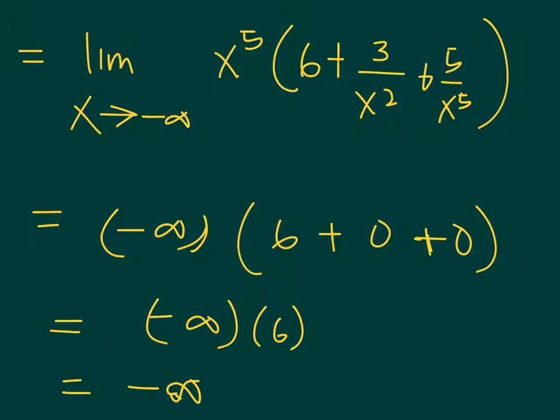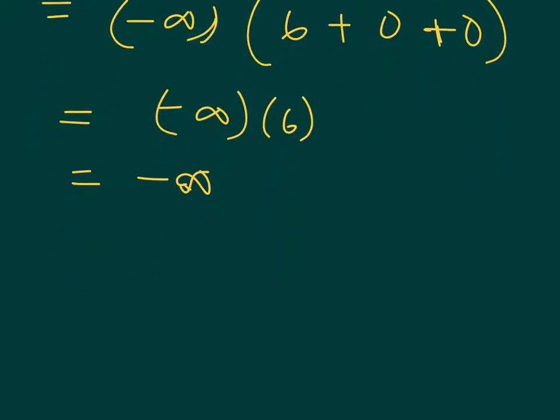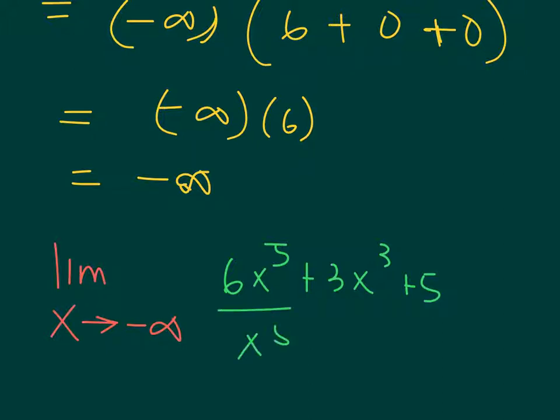So let us show the common mistake. If we suppose we decided to just divide everything by... we have 6x to the 5th plus 3x cubed plus 5. If you decide to divide by x to the 5th, which is actually mathematically incorrect because you cannot just divide by x to the 5th without balancing it with x to the 5th on top.